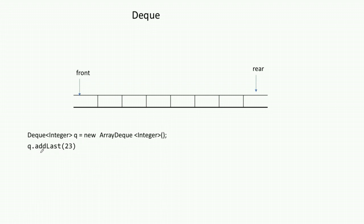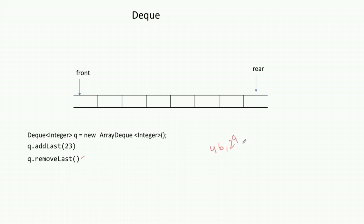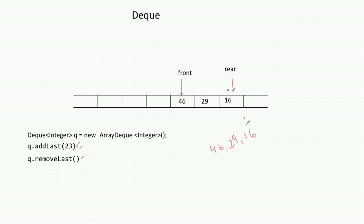Consider the DQ operations. Calling q.addLast inserts value 23 at the rear of the DQ, so rear starts pointing at 23. Calling q.removeLast removes the element from the rear end. Now if I want to insert 46, 29, and 16 from the rear end, I call q.addLast three times. After that, my DQ looks like: rear is pointing to 16 (most recently added) and front is pointing to 46.